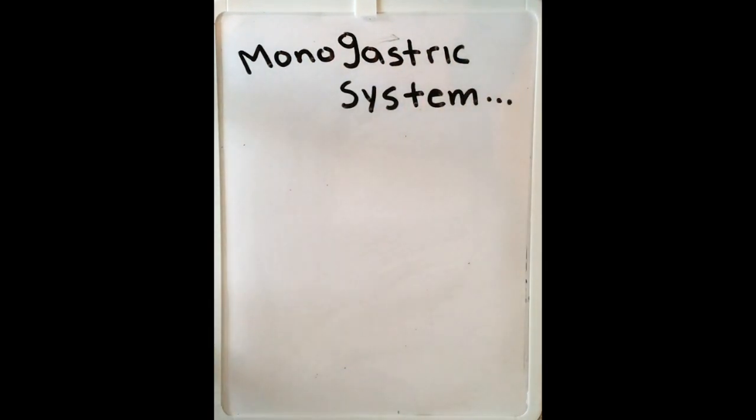A canine has a monogastric digestive system, meaning that it is a simple single-chambered stomach compared to a ruminant like a cow, a goat, or a sheep, which has a multi-chambered stomach.